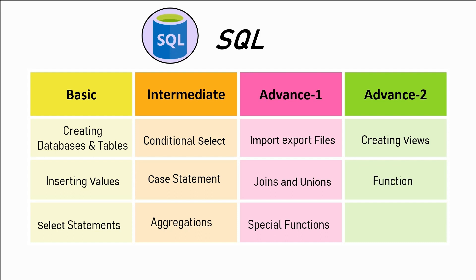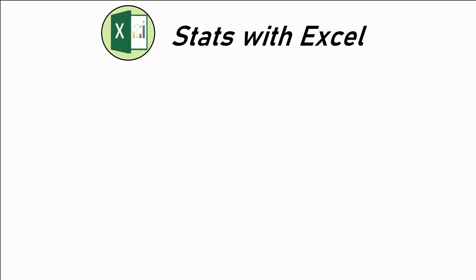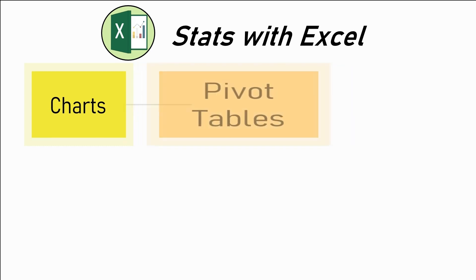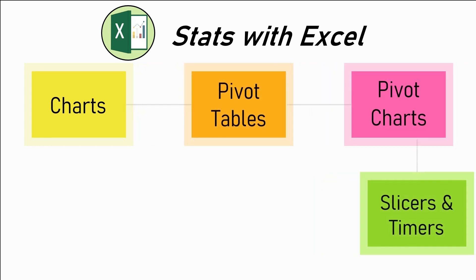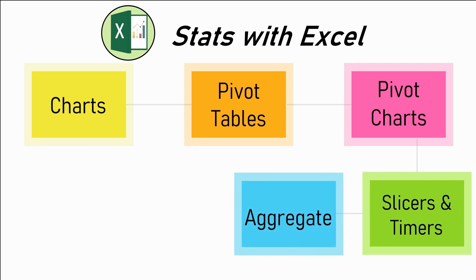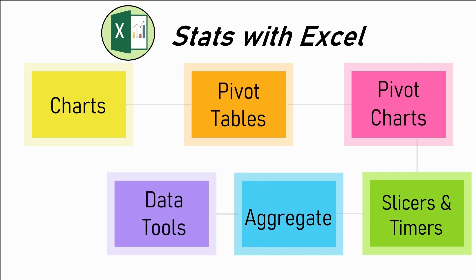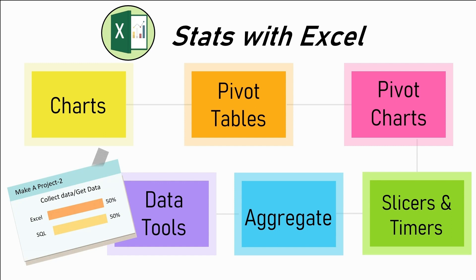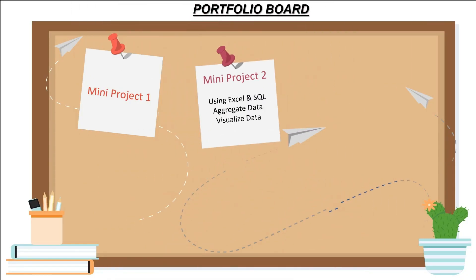The second intermediate skill is statistics with Excel. You already know statistics, you already know Excel — now let's combine the two. Learn all Excel features related to data and data analysis, including creating Excel charts, pivot tables, pivot charts, slicers and timers, basic data aggregations, and all the tools within the Data tab of Excel. After this, using your Excel and SQL knowledge, build a small data-related project doing some basic data analysis — that will make up your project number two.